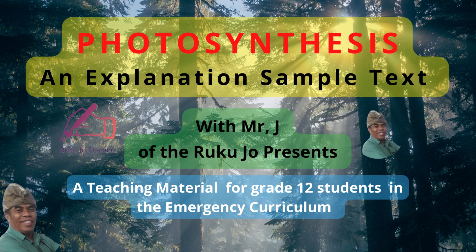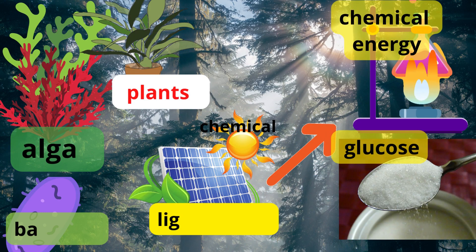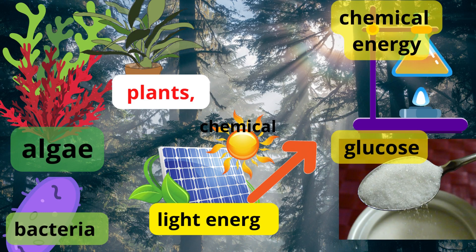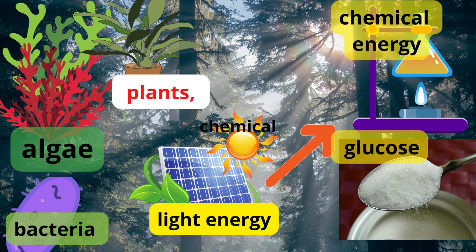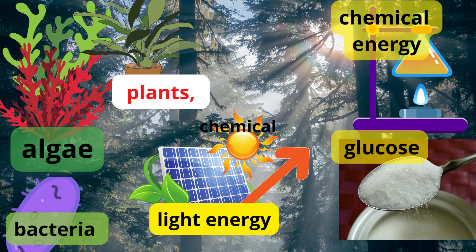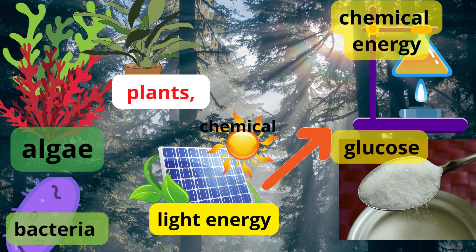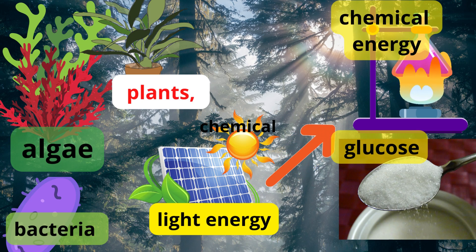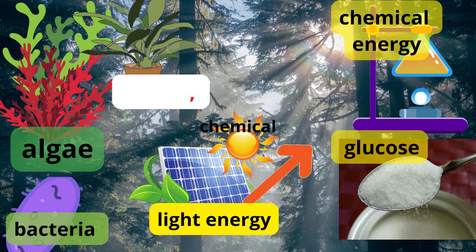Please listen carefully to the speaker and try to understand by answering the questions. Photosynthesis is the process by which plants, algae, and some bacteria convert light energy into chemical energy in the form of glucose — sugar.